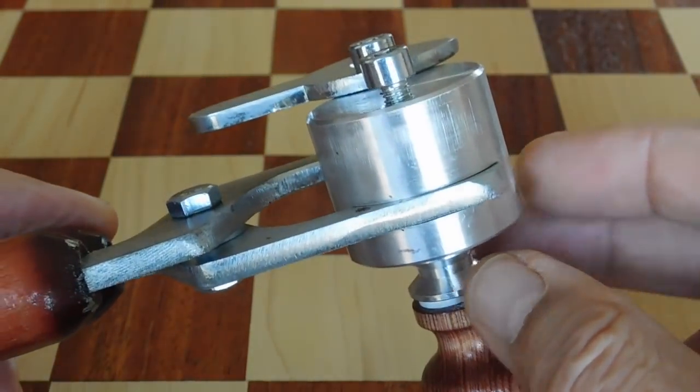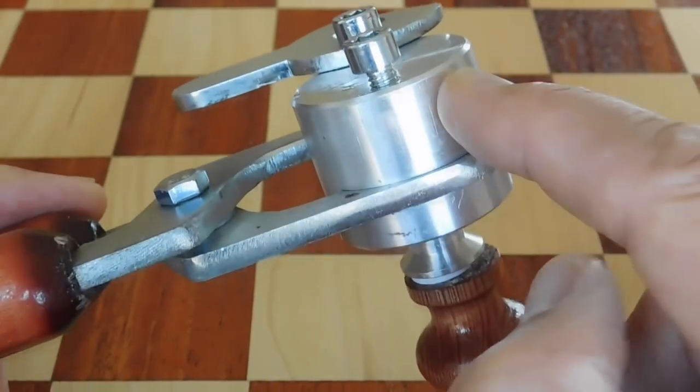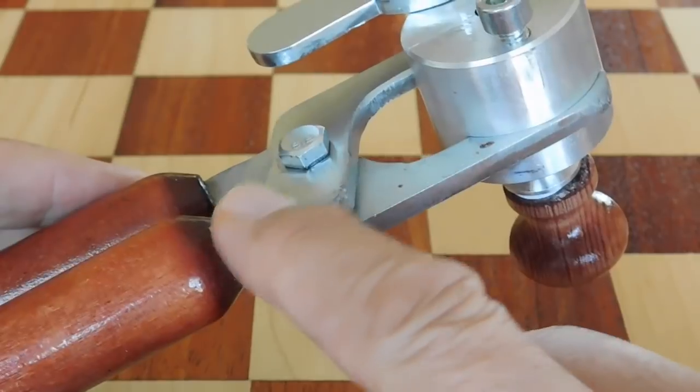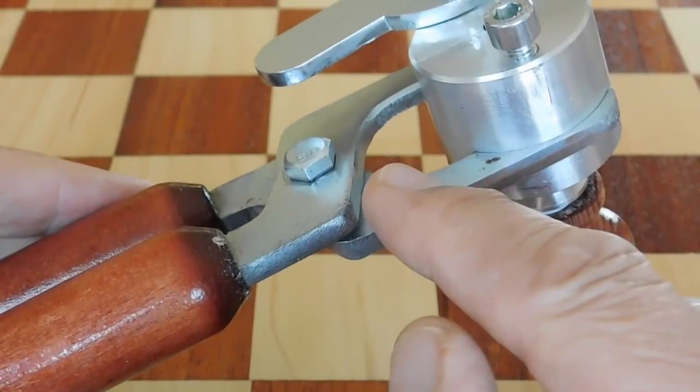Now, it turns out that the mold itself, the blocks, the cylindrical blocks, are made out of aluminum. But the mold handles here, which are proprietary, you can't use these handles for anything else that you have.